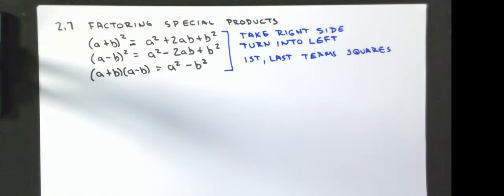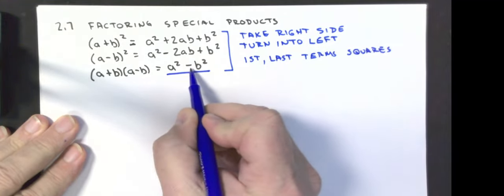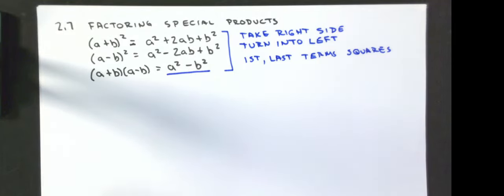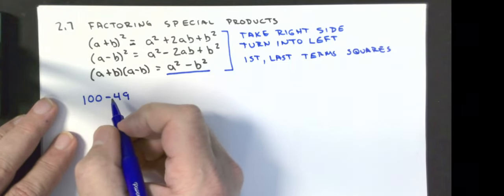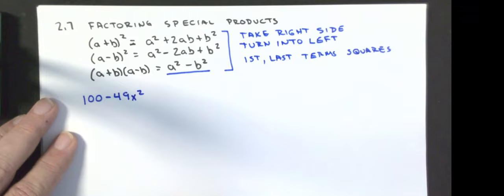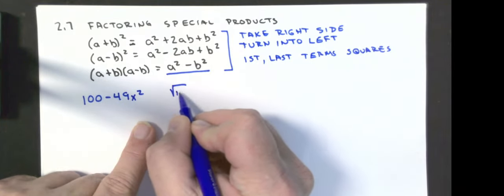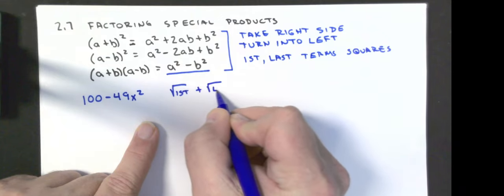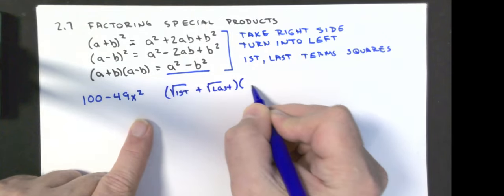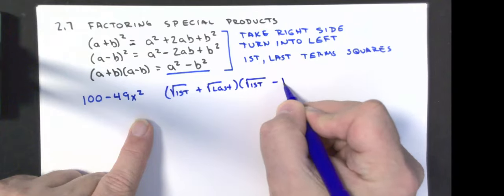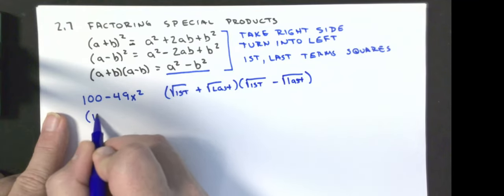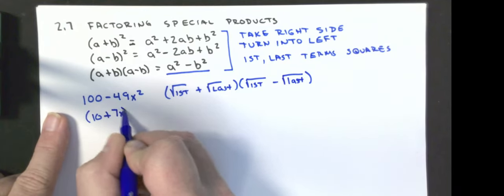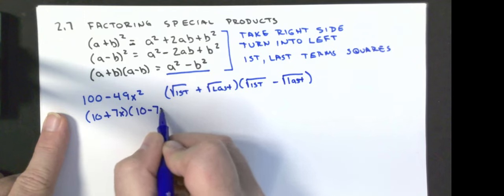I'm going to do multiple examples. The easiest pattern is the difference of squares — notice the sign has to be negative for this pattern to work. The first example is 100 minus 49x². We take the square root of the first, plus the square root of the last, times the square root of the first minus the square root of the last. So that gives us (10 + 7x)(10 minus 7x) and we're done.